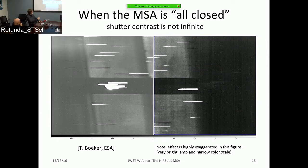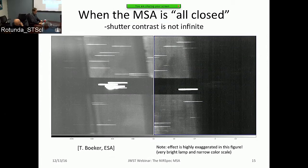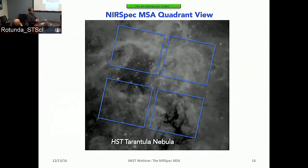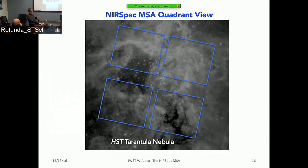I should note the contrast figure shown is highly exaggerated, using very bright illumination from internal flat field lamps. Typical data won't look like this. In summary, the MSA provides a really great way of obtaining multi-object spectroscopy. Here's an example of the four quadrants overlaid on a field — the Tarantula Nebula from HST — showing the powerful capability of obtaining near-infrared spectra of many sources in a relatively short time.